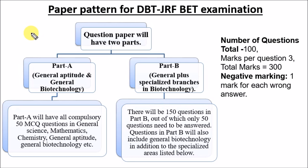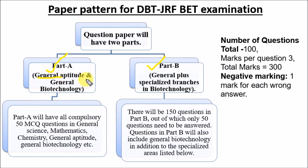Let's see the paper pattern for the DBT JRF examination. The question paper will have two parts: Part A and Part B. Part A includes general aptitude plus general biotechnology, and Part B includes general plus specialized branches of biotechnology.